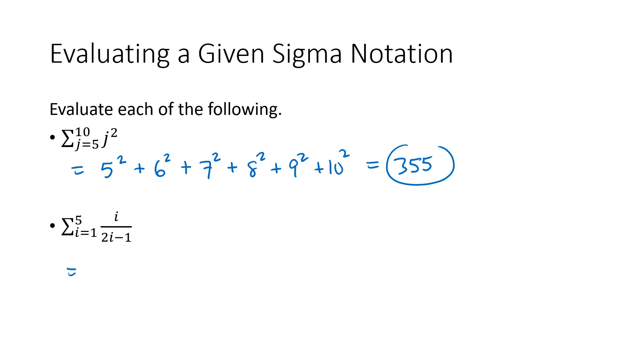Next one's pretty similar. We have multiple i's to plug into, but that's okay. You just take your value of i and plug it in everywhere you see it. So in this case we're starting at i equals 1, so our first value is going to be 1 divided by 2 times 1 minus 1, and then 2 over 2 times 2 minus 1, and we're going to keep going until we get to i equals 5.